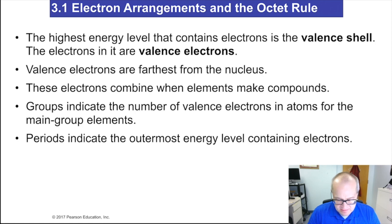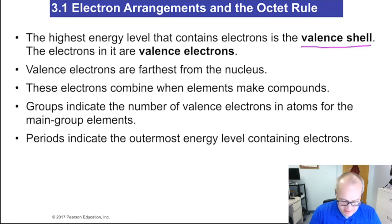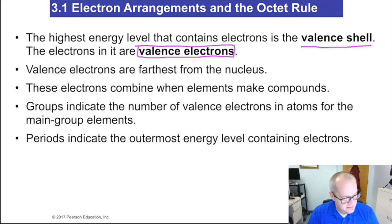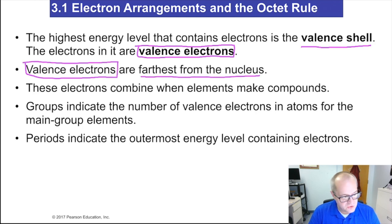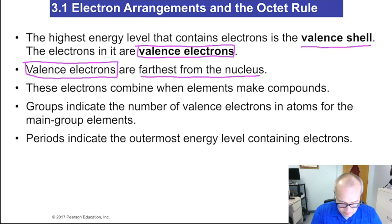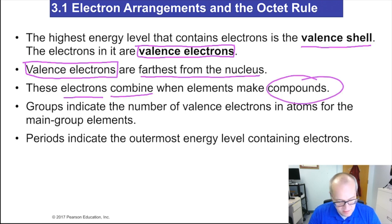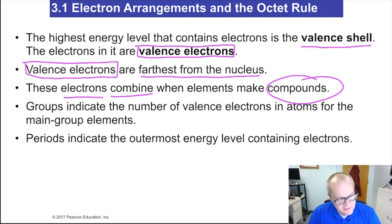The highest energy level that contains electrons is the valence shell. Inside the valence shell are what are known as the valence electrons. The valence electrons are the furthest from the nucleus — they're on the frontier, the outermost electrons. These electrons combine and do all the magic to make compounds. The outermost electrons do all the work. The innermost electrons, called core electrons, don't really get involved, so we worry more about the valence electrons.